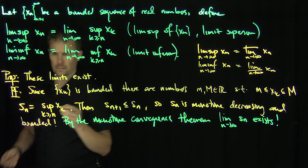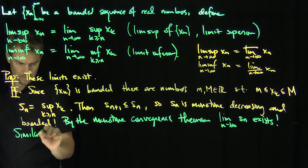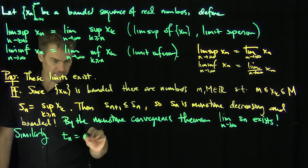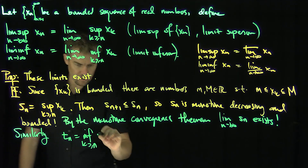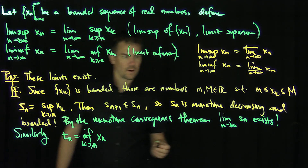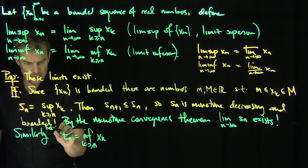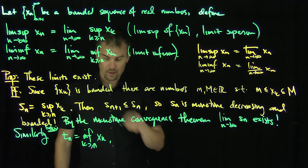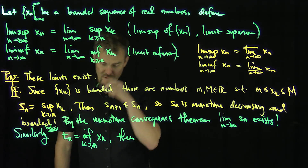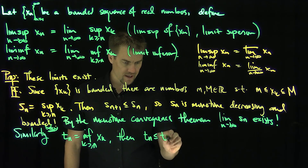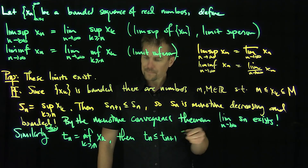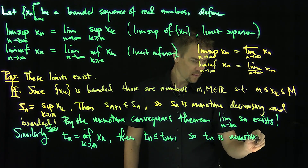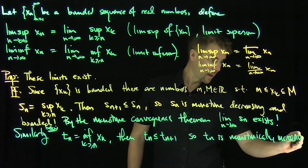Similarly, let tn be the infimum over k greater than or equal to n of xk. This sequence tn is actually increasing — you can throw away smaller things, so tn ≤ t(n+1) for all n. So tn is monotone increasing and bounded above.